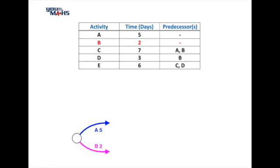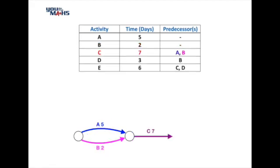The next task to look at is activity C. That has two predecessors, A and B, so logically the lines from A and B will join one node and C will come off that, indicating that activity C cannot start until both activity A and B are done.